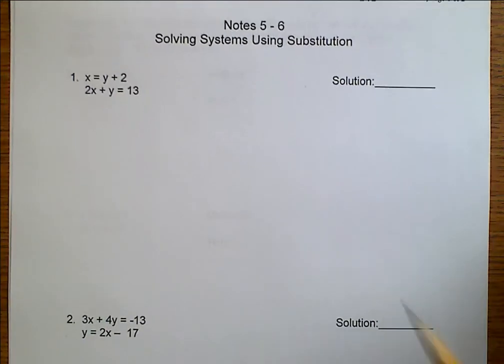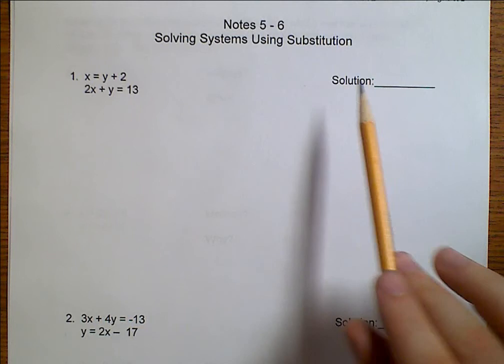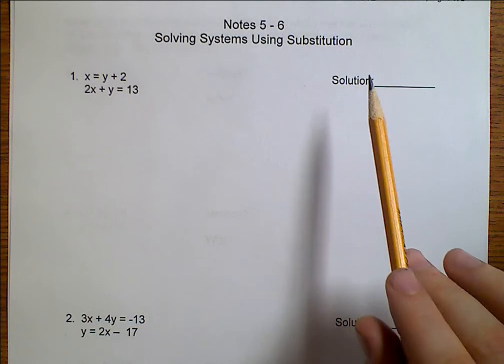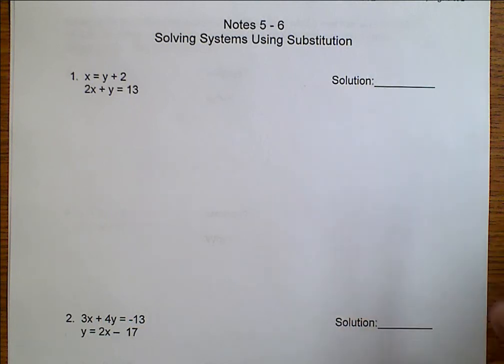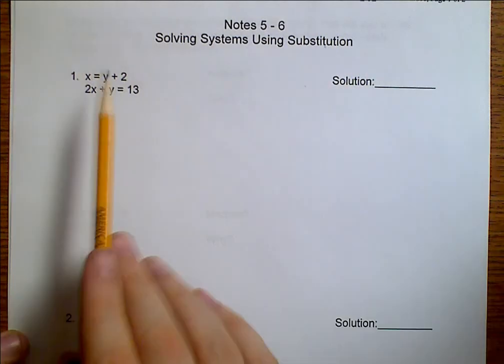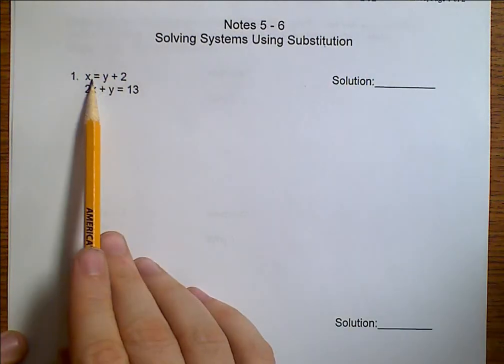Earlier we talked about solving systems using elimination. That's one method. Another method is substitution. Elimination is good when you have things set up AX plus BY equals C. Substitution is good for when one variable is already solved for, like this one.